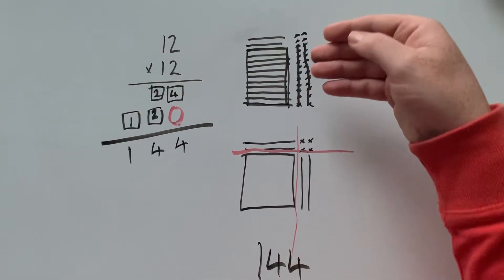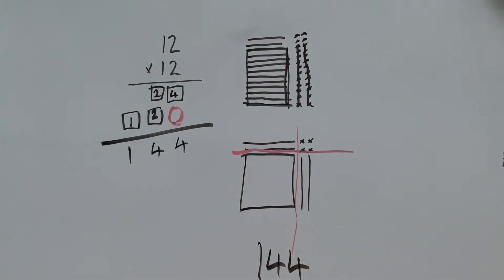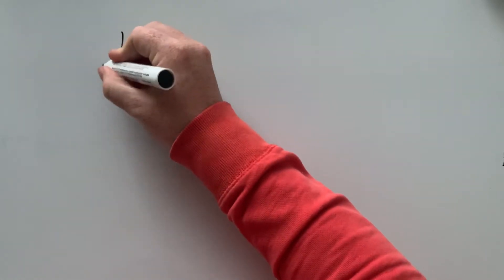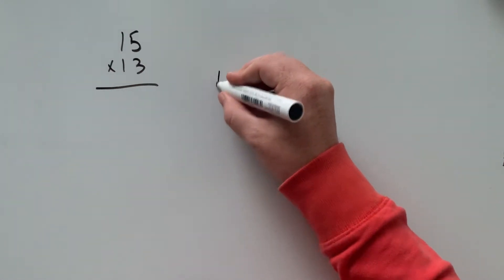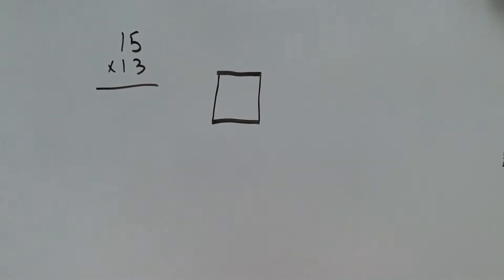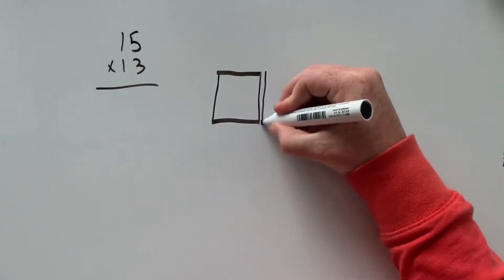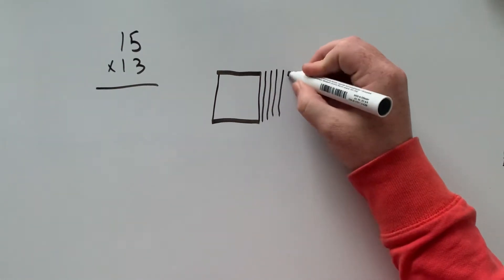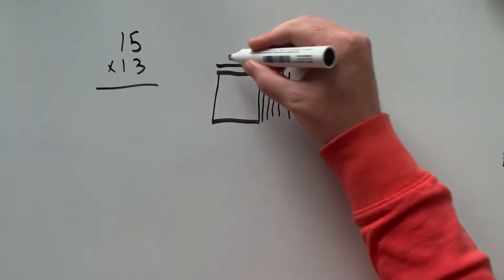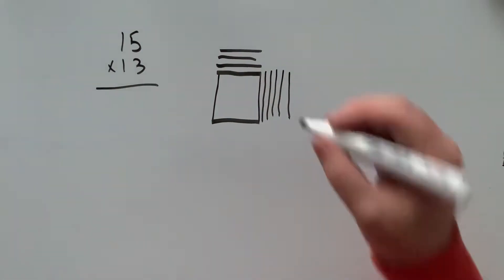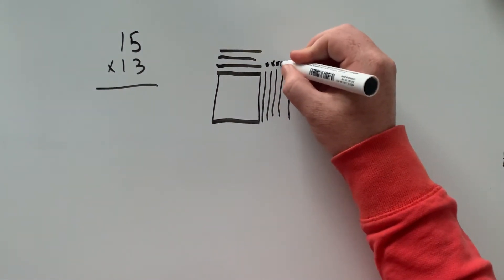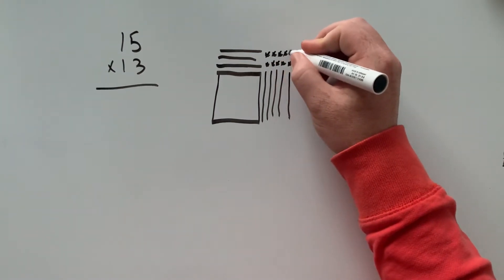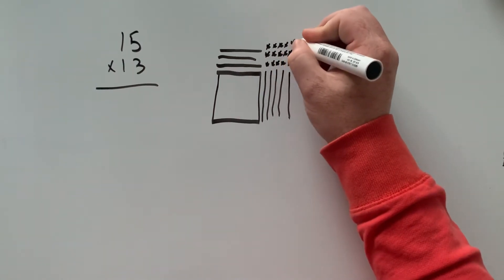We want to try and build that understanding of why we're going to the hundreds. So let's go again, this time with 15 times 13. So 15 is the number to build across, and it's a two-digit by two-digit. I start with my hundreds block, and it's 15 going across: one, two, three, four, five. And it's 13: one, two, three. And then I need to do three rows of five.